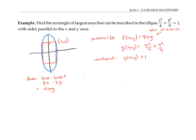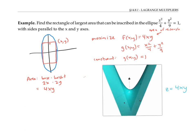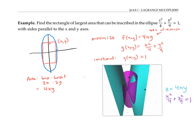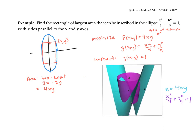Let's look at the problem graphically. This blue surface is the graph of z equals 4xy, so we want to find the maximum z value on this blue surface, but we're also subject to the constraint that we need to lie on the magenta surface given by this equation. So we want the highest point on the blue surface that's also on the magenta surface.